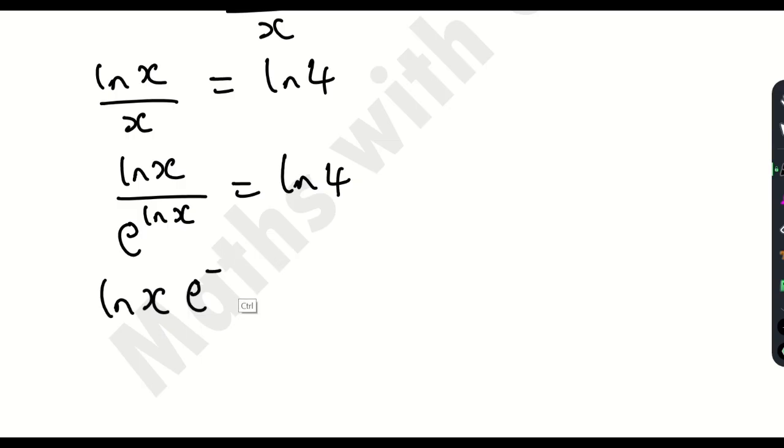So let us rewrite this as ln x times e raised by ln x. Before I do this, let me just show you something else. So ln x times 1 over e to the ln x. Of course, if you multiply this, you are going to get this back, right? So this is equal to ln 4.